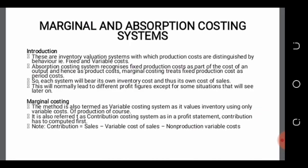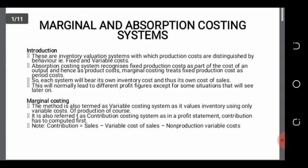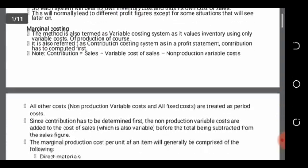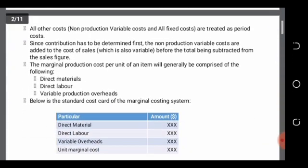After having a contribution, we subtract the remaining costs, which will be fixed costs. The marginal production cost per unit contains only variable cost components: direct materials, direct labor, and variable production overheads.